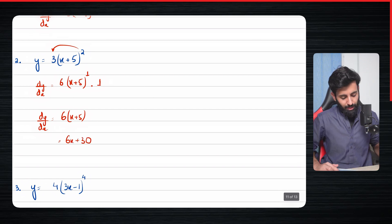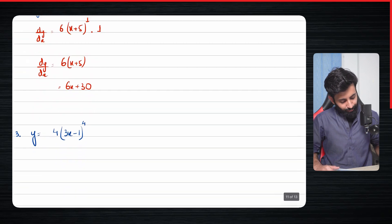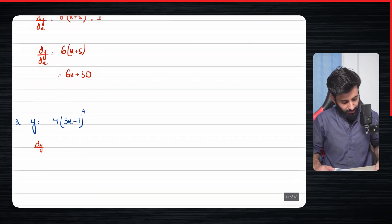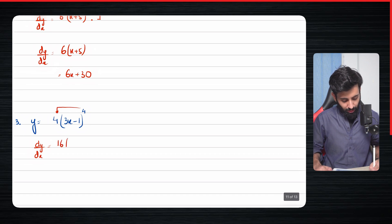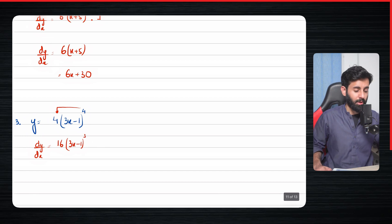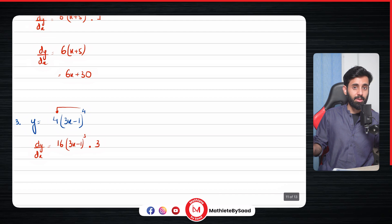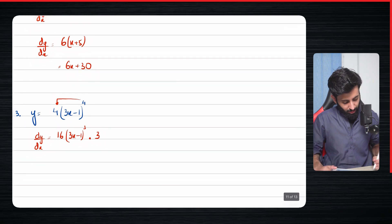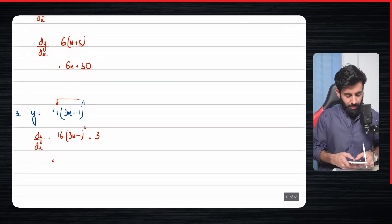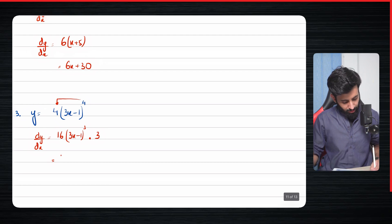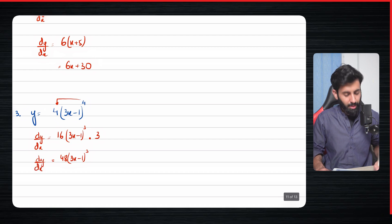For the third example, four times four is sixteen. Don't forget to reduce the power by one, so four minus one is three. Then multiply by the differential of the expression inside the bracket, which is three. So 16 times 3 is 48, giving dy/dx = 48(3x − 1)³.